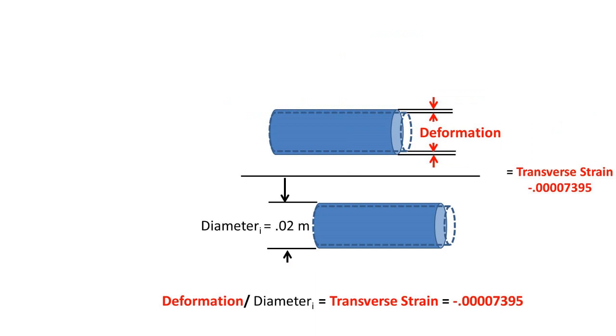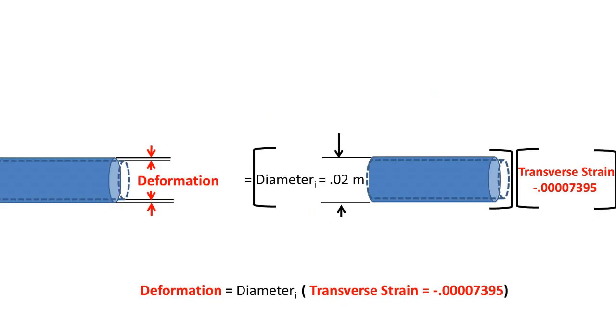Now we can set what we found the transverse strain to be equal to, and set it equal to the deformation over the initial diameter of the rod, which the deformation is the total deformation of the diameter over the initial diameter of 0.02 meters. Now we can multiply each side by the initial diameter to get the deformation to one side of the equation.